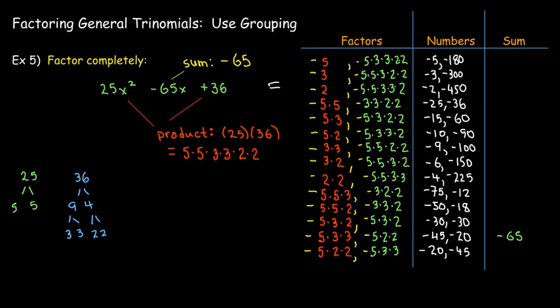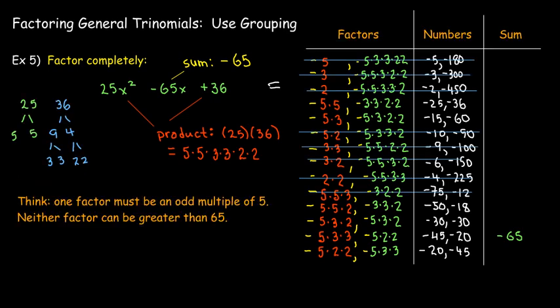If you're smart about it, you can avoid a large number of trials by thinking: the sum has to be negative 65, which ends in 5. The only way to get a number ending in 5 is if one of the factors is an odd multiple of 5 — so 5, 15, or 25.